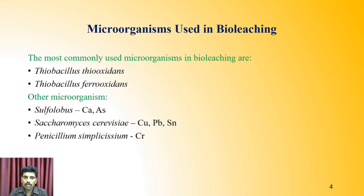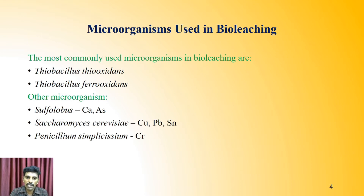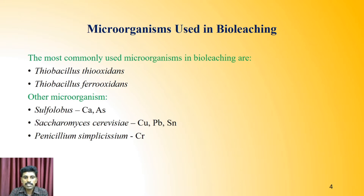The microorganisms commonly used for leaching include Thiobacillus thiooxidans and Thiobacillus ferroxidans as the two major groups. Other microorganisms also help recover metal products: Sulfolobus can help release calcium and arsenic; Saccharomyces herbaceae can help recover copper, lead, and tin; and Penicillium simplicissimum can provoke the recovery of chromate.